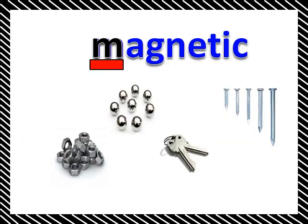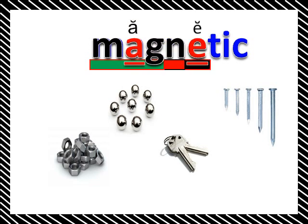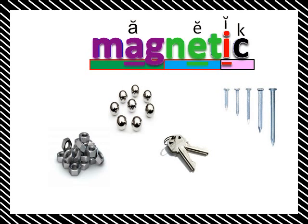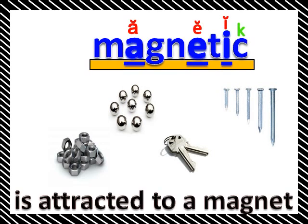Magnetic. M-A-G-N-E-T-I-C. Magnetic is an object that is attracted to a magnet. You see those metal objects — the nails and such. If you put a magnet close to them, the magnet will grab onto them because they are attracted to the magnet. Anything that's attracted to a magnet is called a magnetic object.